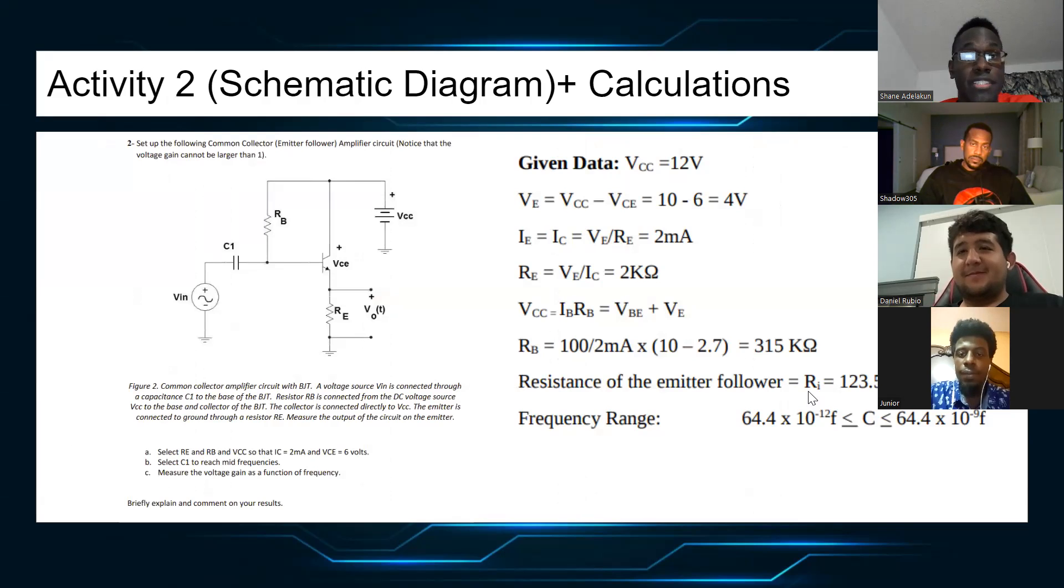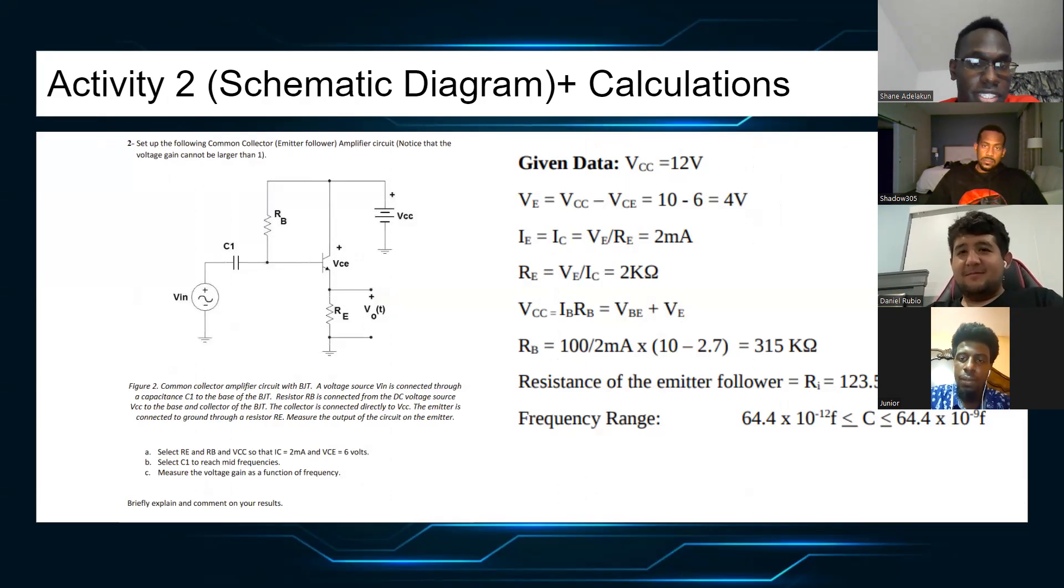This is Activity 2 and the calculations. For Activity 2, we're going to be doing the same thing. Trying to find RE and RB and the voltage. IC equals 2mA and VC equals 6 volts. And find the C1 to reach the mid frequencies.